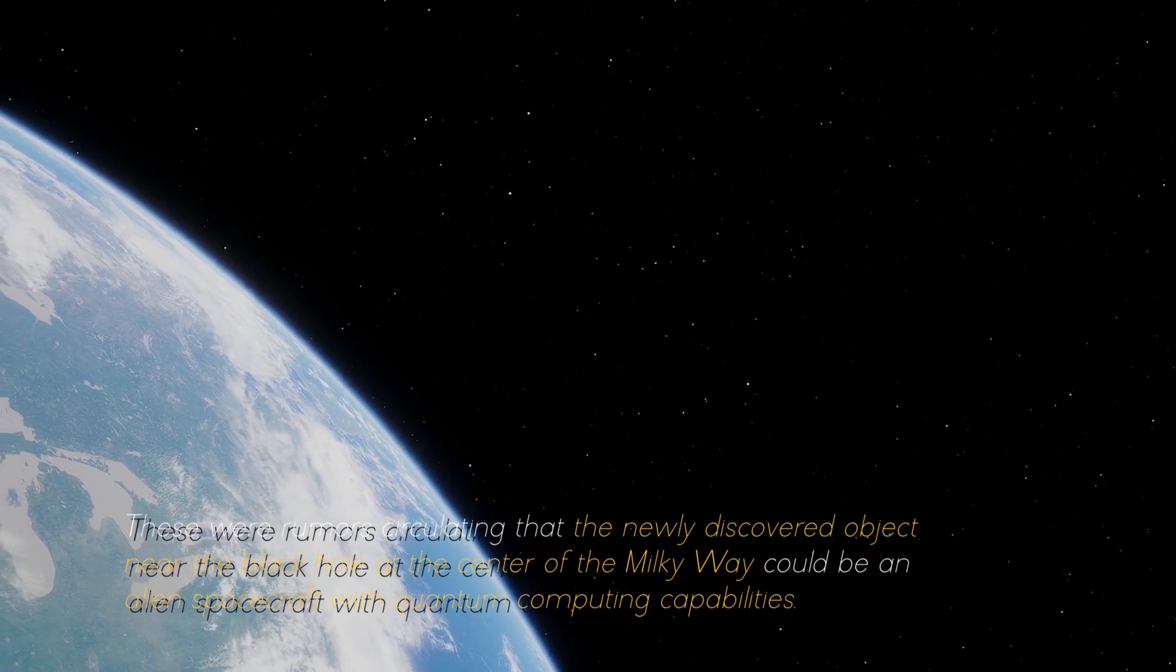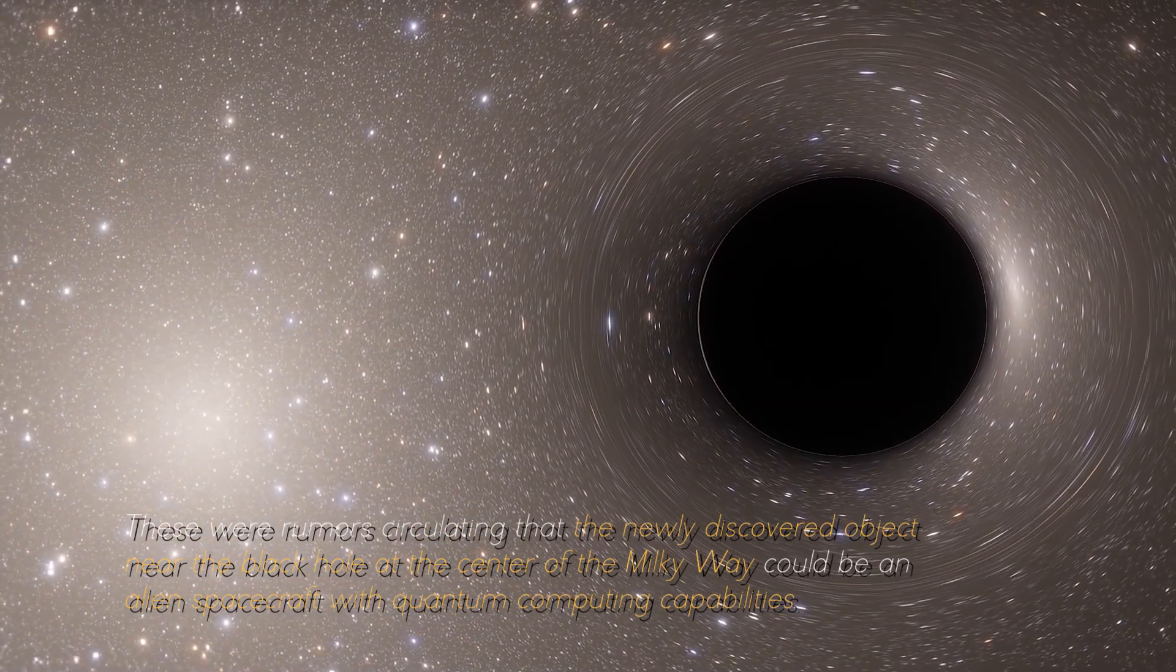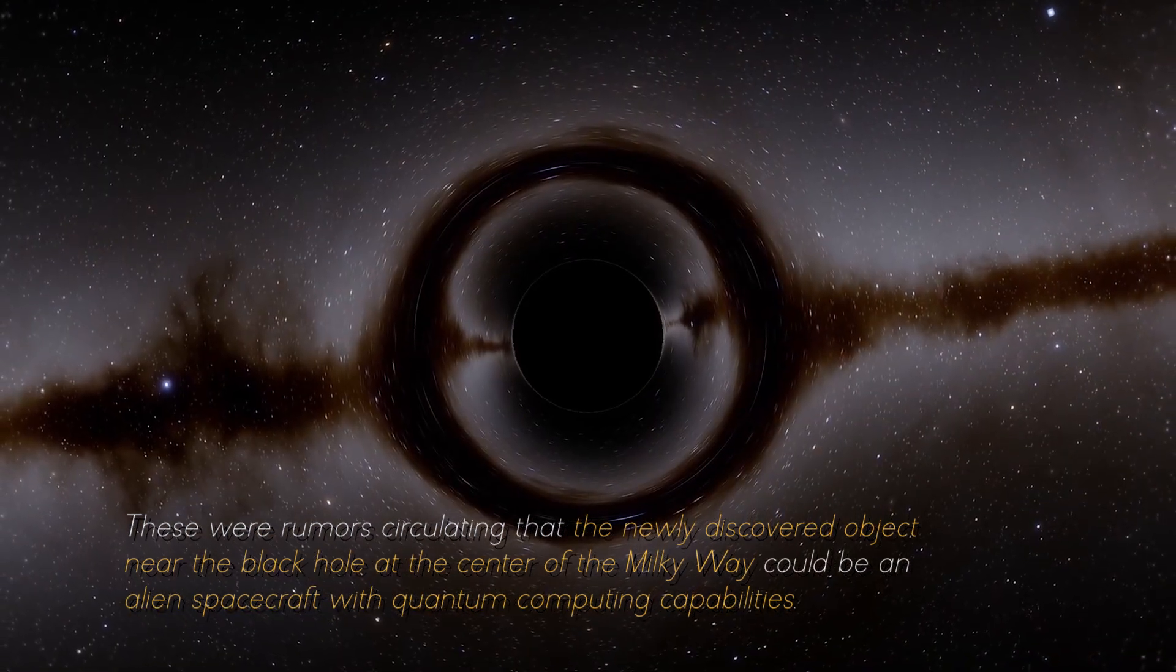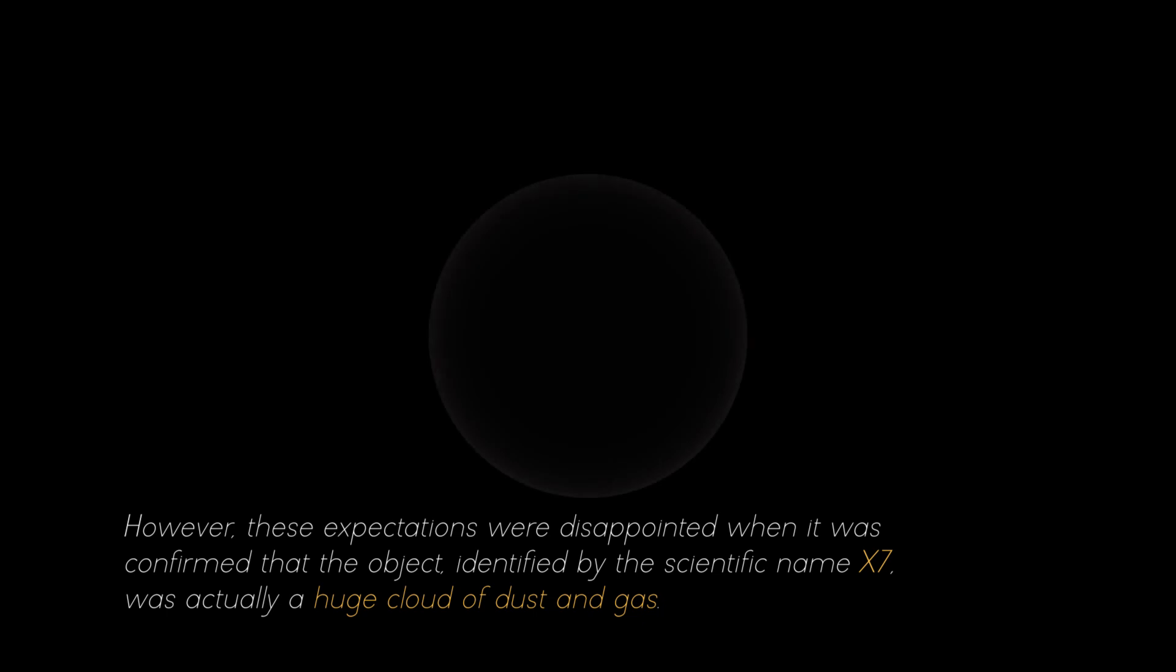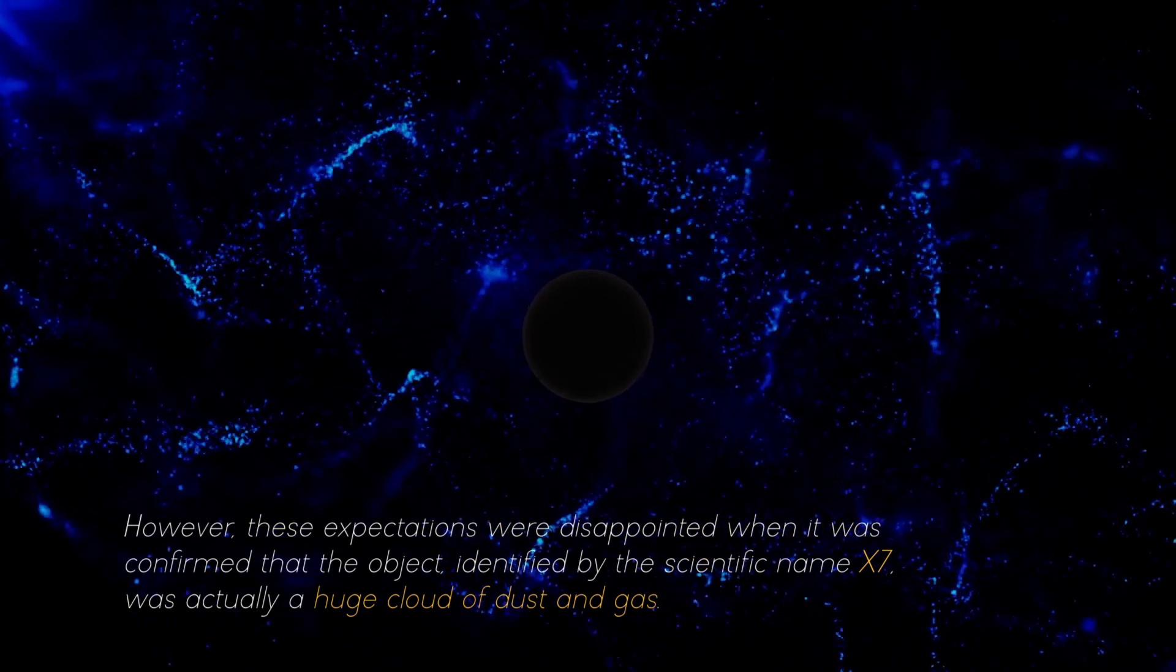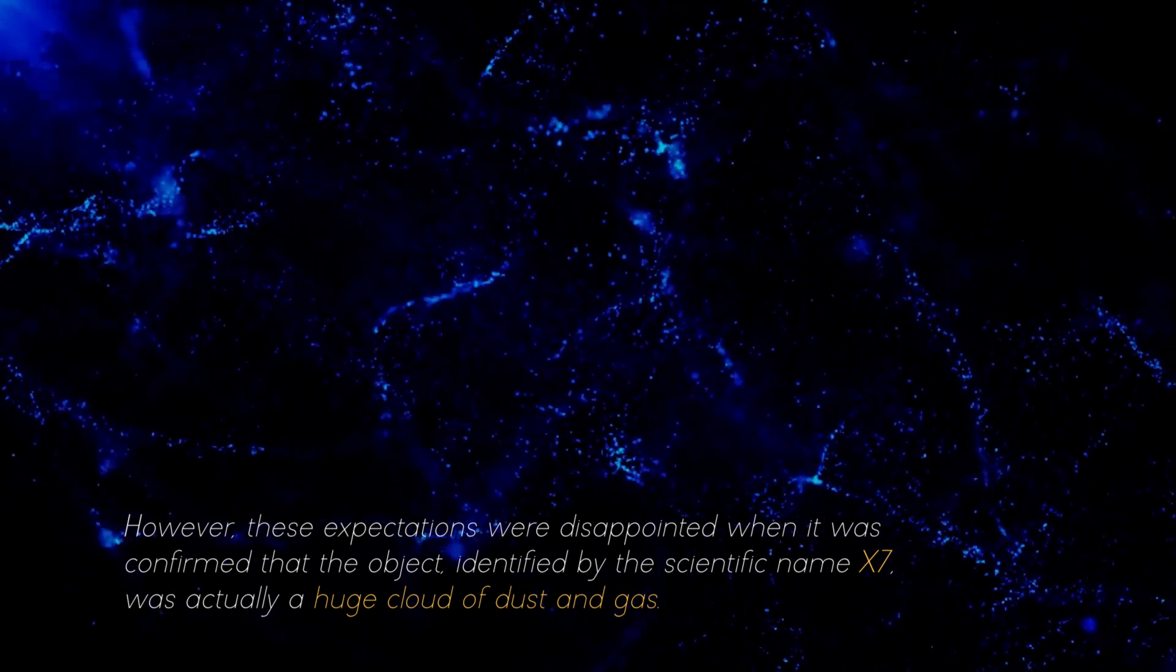A prospect far beyond our conventional imagination. There were rumors circulating that the newly discovered object near the black hole at the center of the Milky Way could be an alien spacecraft with quantum computing capabilities. However, these expectations were disappointed when it was confirmed that the object identified by the scientific name X7 was actually a huge cloud of dust and gas.